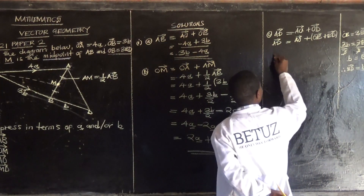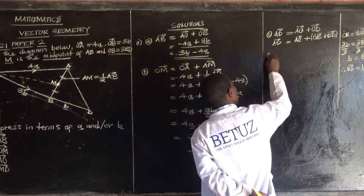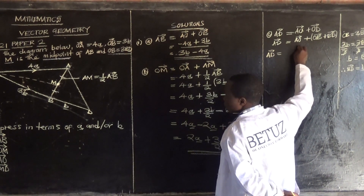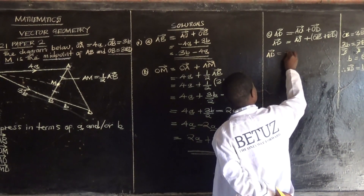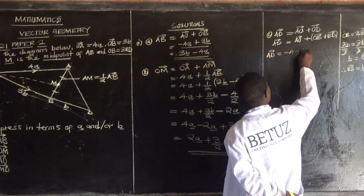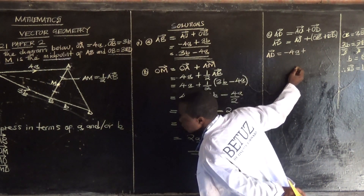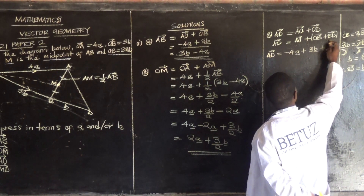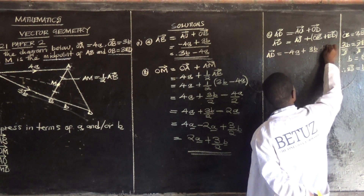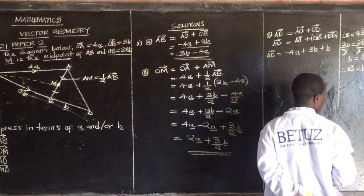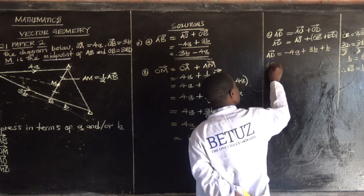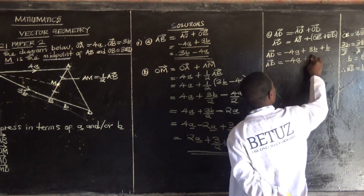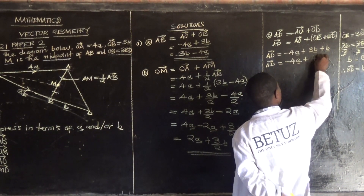So we can now find AD. AD equals AO plus OB plus BD. What is AO? Negative 4 vector a. Plus OB which is 3 vector b. Plus BD which is vector b. So AD equals negative 4 vector a plus 3b plus b, which is negative 4a plus 4b.